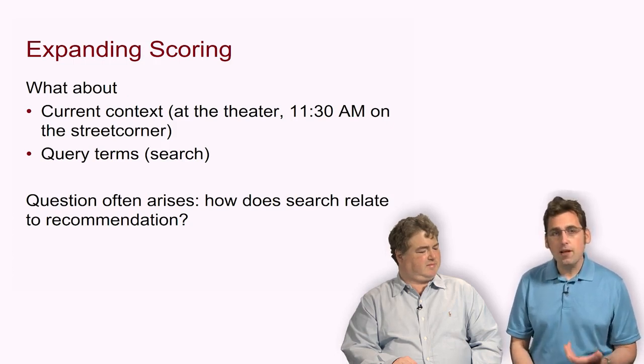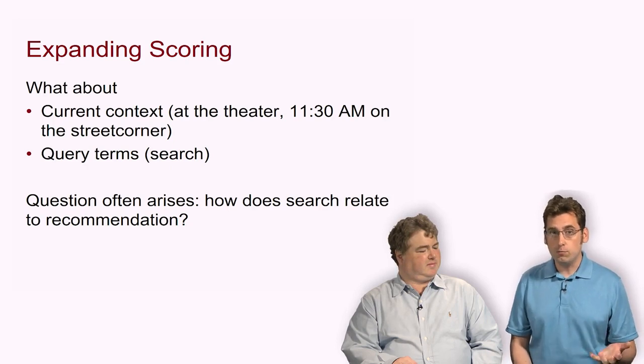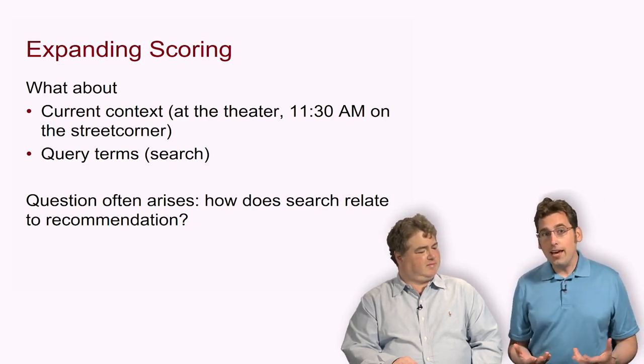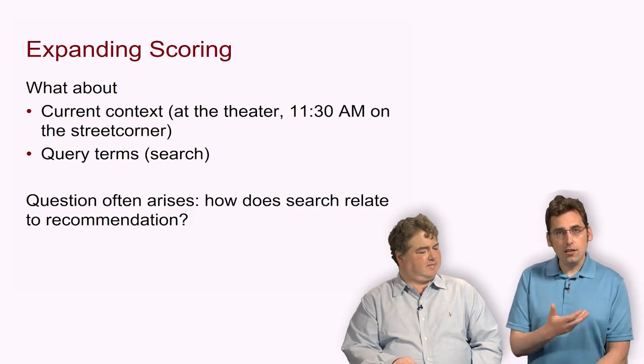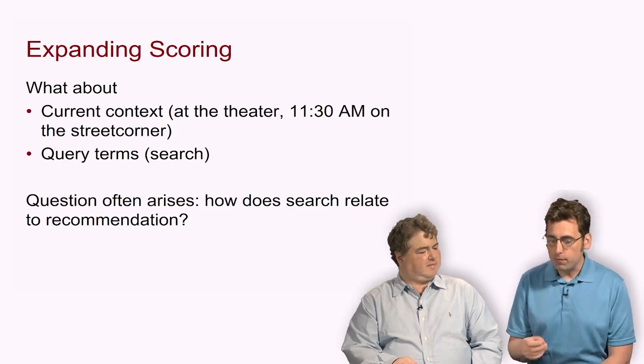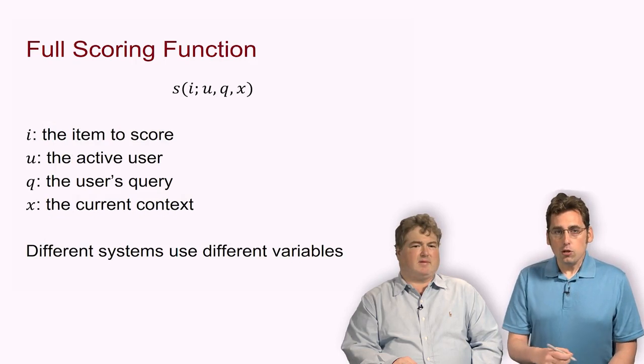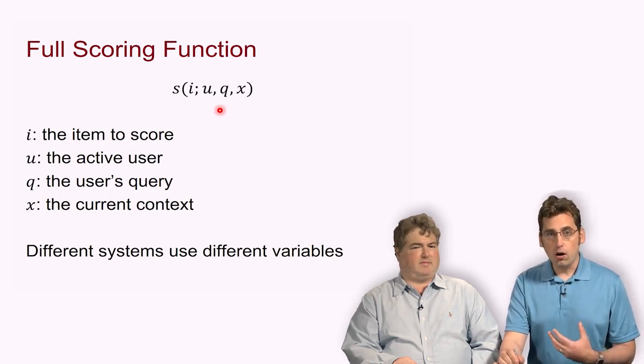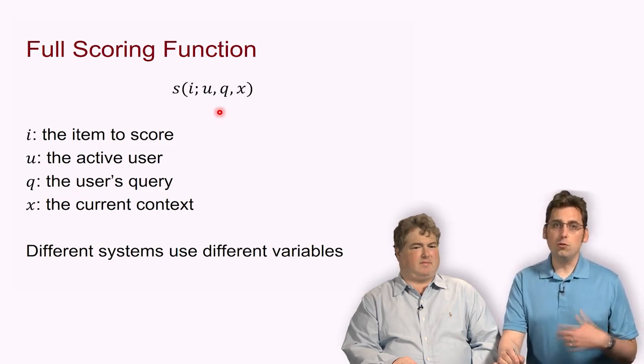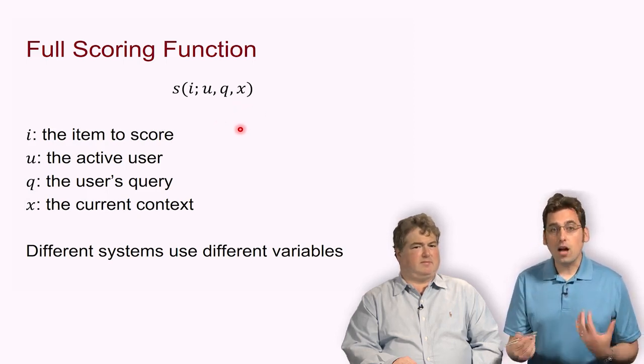So far, our score depends on the item and the user, but what if the user is searching for something or they have some particular context? They're at a theater where maybe they want recommendations for the movies currently showing, or it's 11:30 AM on the street corner, so the restaurants they're most interested in are lunch within half a dozen blocks. How can we integrate these? We can expand the definition of our scoring function to include a context, represented by X.